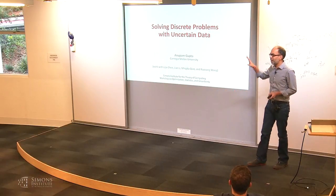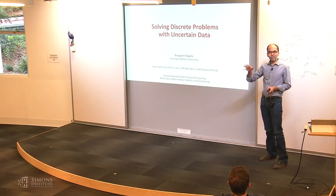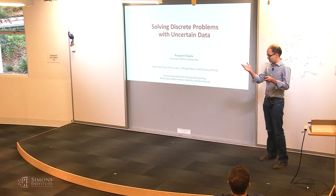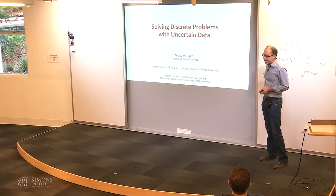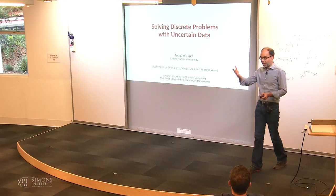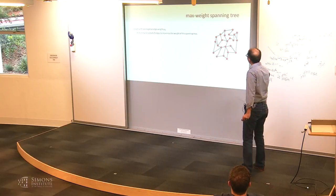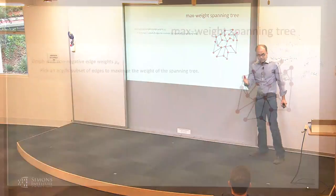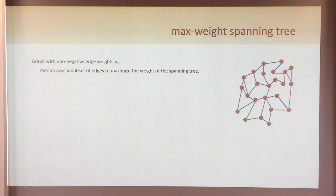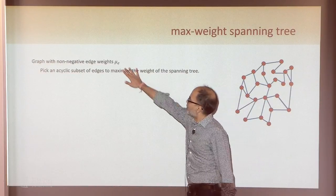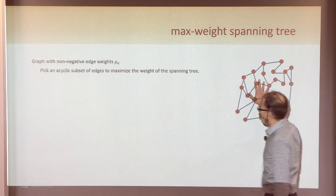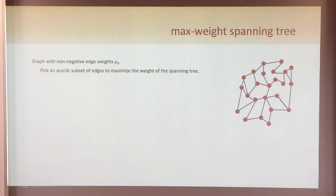The uncertainty here and the problems we'll be considering will be very different from the previous talks. The problem is the following — this is the way I came to this problem. I want to solve the spanning tree problem, a max weight spanning tree problem. You're given these weights, and with respect to these weights, you want to find an acyclic subset of edges with maximum weight.